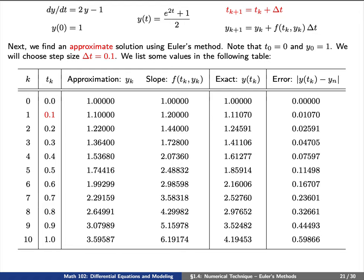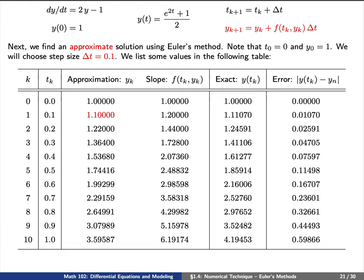We can compute t sub 1 by these two properties. First, t sub 1 equals t0 plus delta t and second we chose delta t equals 0.1.